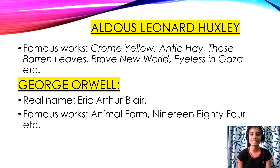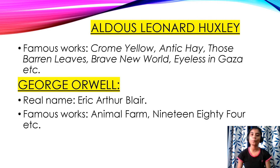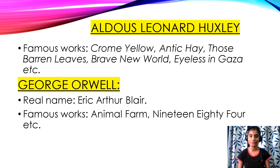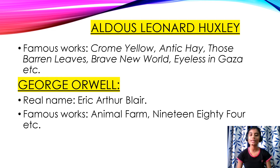The next novelist is Aldous Huxley. His famous works are Chrome Yellow, Antic Hay, Those Barren Leaves, Brave New World which is a dystopian novel, and Eyeless in Gaza, etc. Another novelist of this age is George Orwell. His real name is Eric Arthur Blair — please remember this because they can ask whose real name was Eric Arthur Blair, and the answer is George Orwell. His famous works are Animal Farm and 1984.